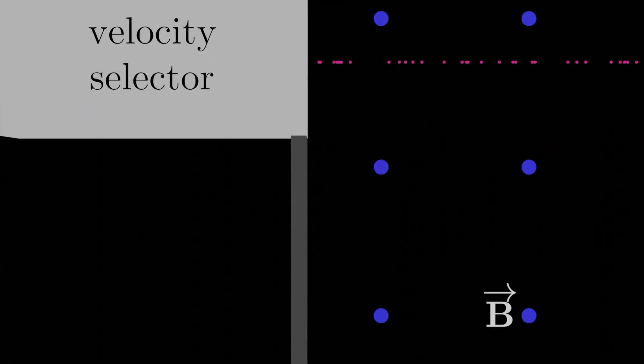In the next lesson, we'll build on top of this velocity selector device and talk about the mass spectrometer. See you there.